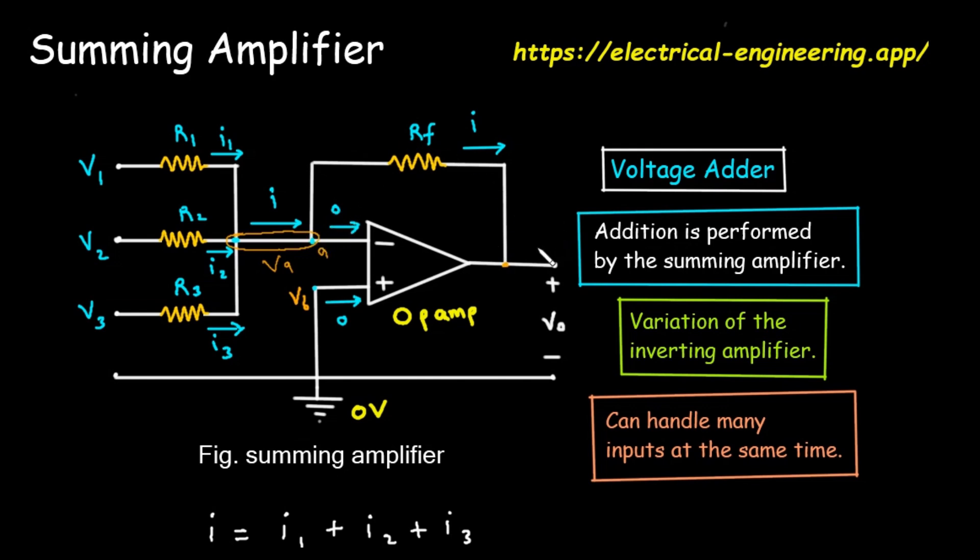On the right side of the image, there are several notes that summarize the purpose of this circuit. It's called a voltage adder, which is another name for a summing amplifier. Addition is performed by the summing amplifier. A key insight is that this is a variation of the inverting amplifier. A basic inverting amplifier has just one input. Our circuit is an expanded version of that, designed to handle multiple inputs.